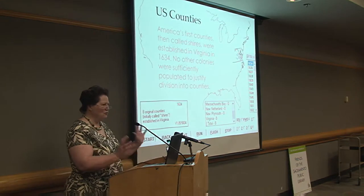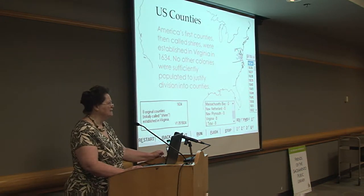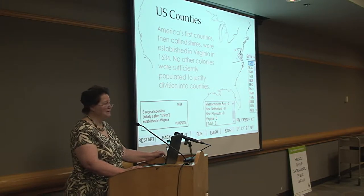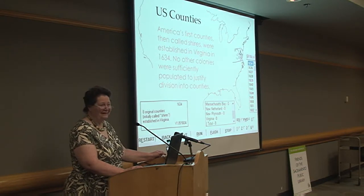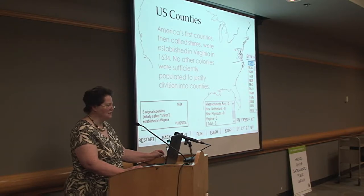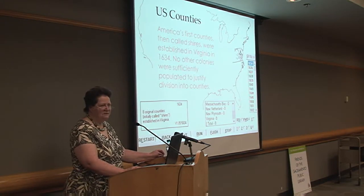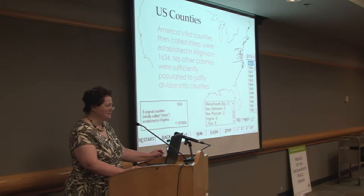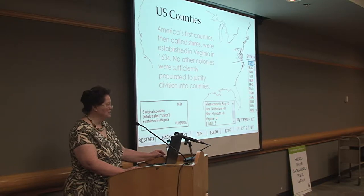Just to get us oriented a little bit, you want to keep in mind that America's first counties were originally called shires because it was part of England, and all things were English over here. The first shires were established in Virginia in 1634. No other colonies besides Virginia were sufficiently populated to justify being broken into counties. What you're looking at is one of the maps that comes from ANIMAP, which is software you can install on your computer, and there are some websites that use their screenshots.